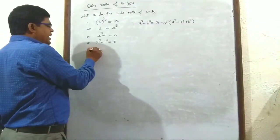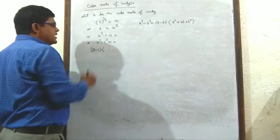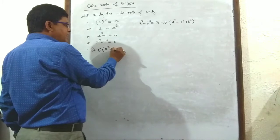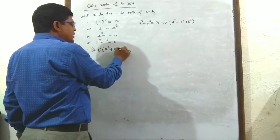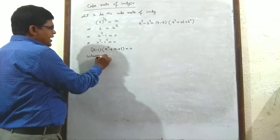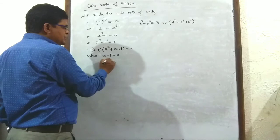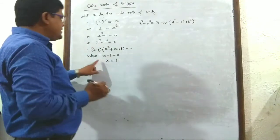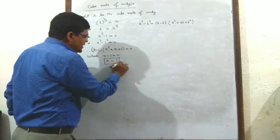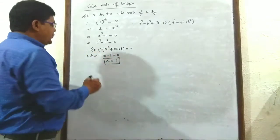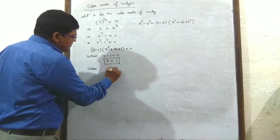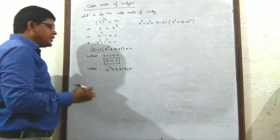Therefore, (x - 1) in the first bracket, and (x² + x + 1) in the second bracket, equals 0. When x - 1 = 0, x equals 1. And x² + x + 1 = 0.